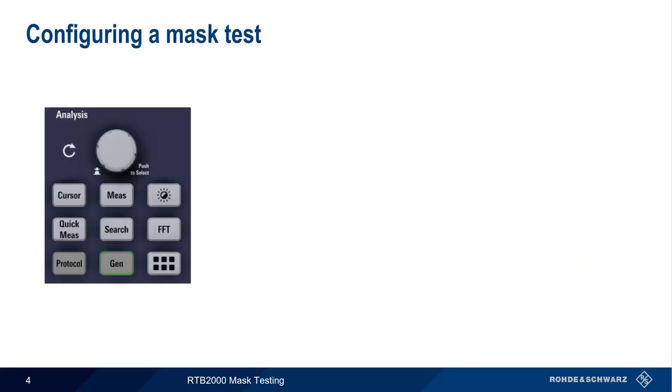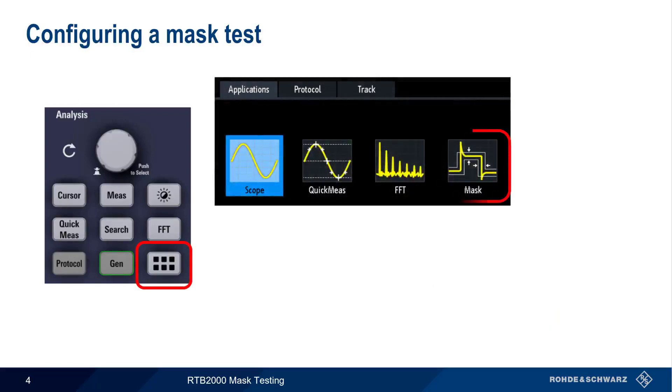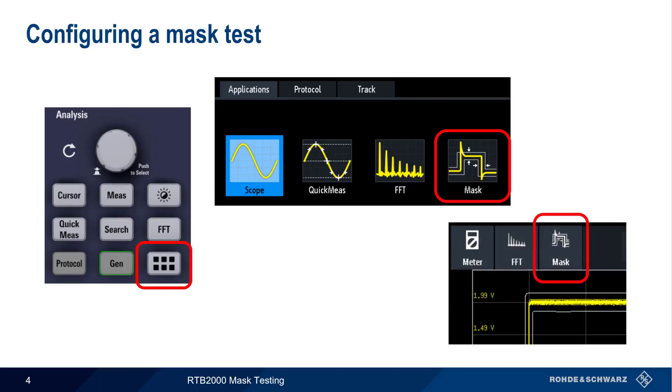To configure a mask test, first press the Applications hard key on the front of the RTB, and then select Mask from the list of available applications. Mask testing can also be started using the Mask icon in the toolbar menu.